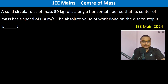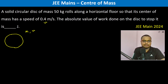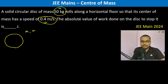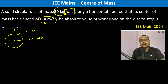It's a circular disk with mass 50g. It is rolling, so therefore v should be equal to omega into r.